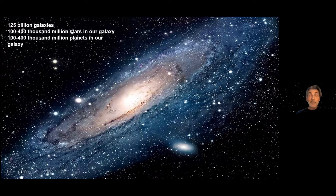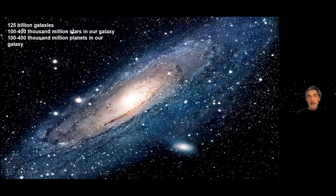One of the interesting things about our universe is that in the visible universe we have over 125 billion galaxies — the Milky Way is our own galaxy but we have 125 billion of them, and that's only in the visible universe. In each galaxy there are about 100 to 400 thousand million stars, and each of these stars hosts at least one planet. A considerable fraction of these planets is in the so-called habitable zone, meaning it's not too cold or too hot for life as we know it to emerge.